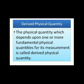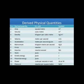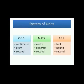Examples of derived physical quantities include force, density, speed, etc. Some examples are given in a table: area — SI unit is square meter, symbol m²; volume, density, velocity, acceleration, force, work, power, and pressure are all derived physical quantities. As you know, units are classified into two groups: fundamental units and derived units. A set of fundamental and derived units is called a system of units.